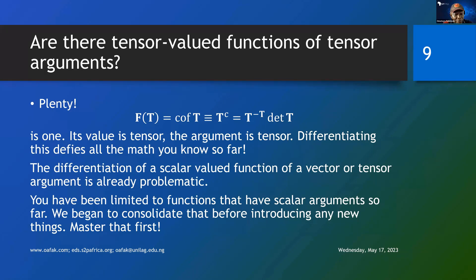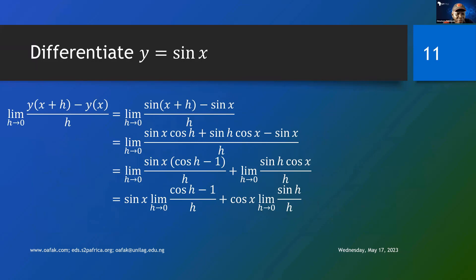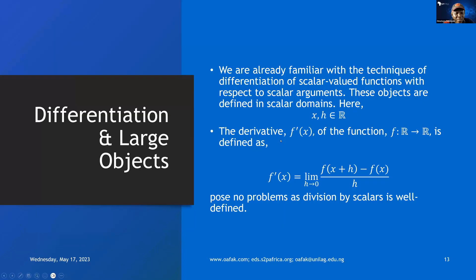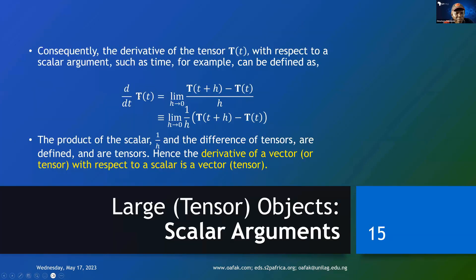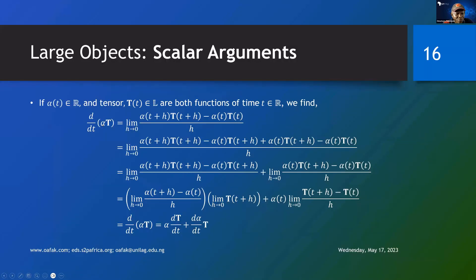Differentiating a tensor-valued function of tensor arguments defies all the mathematics you know so far. Even if you got A1 all the way to this point, you will fail in this one unless you learn something new. The differentiation of a scalar-valued function of a vector or tensor is already problematic — you have been limited to functions that have scalar arguments so far. We began to consider that before introducing any new things. Master that first. So we now came here and started differentiating large objects — objects that are functions of time and functions of scalars.